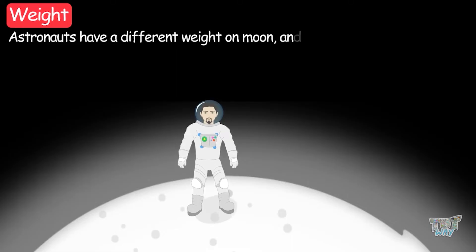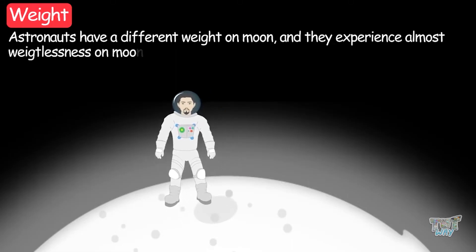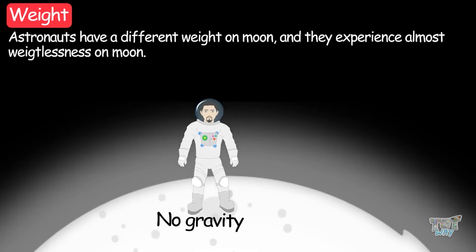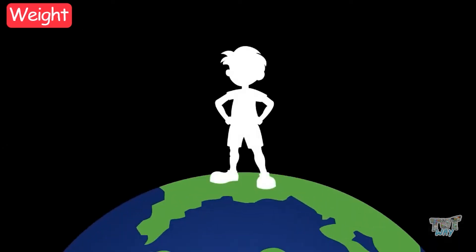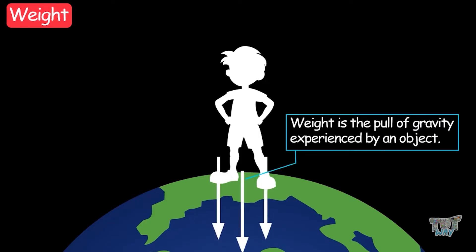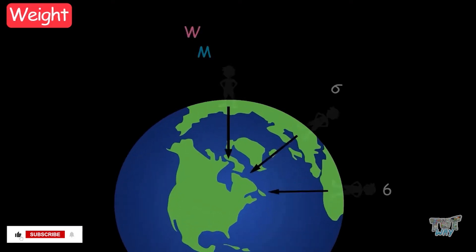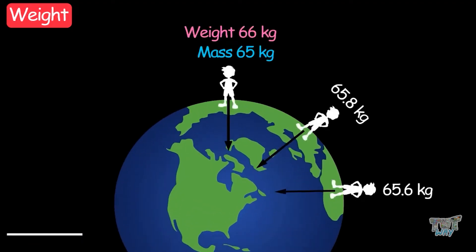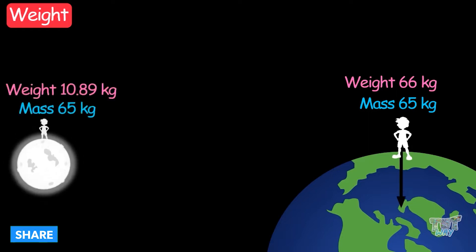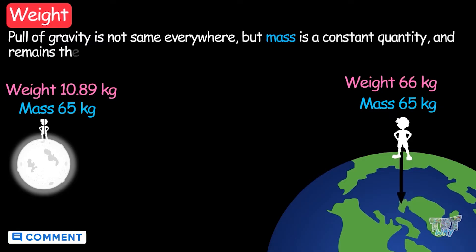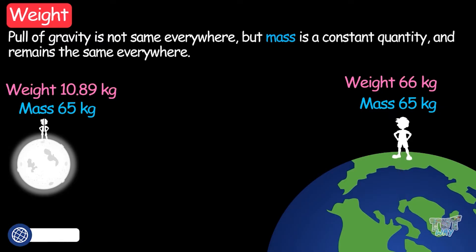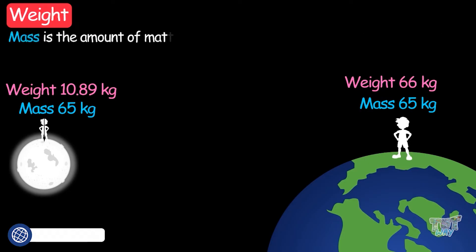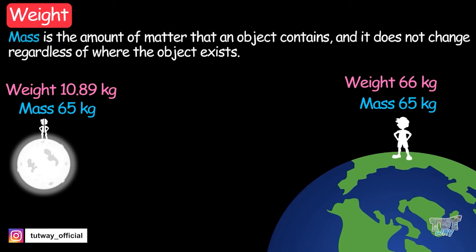This is why astronauts have a different weight on the moon, and they experience almost weightlessness on the moon, because there is no gravity, and weight is all about the attraction of gravity. Weight is different in different places on the earth or elsewhere because the pull of gravity is not the same everywhere. But mass is a constant quantity and remains the same everywhere, because it is the amount of matter that an object contains and will not change regardless of where the object exists.